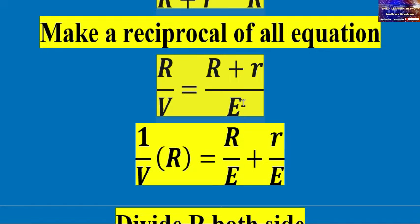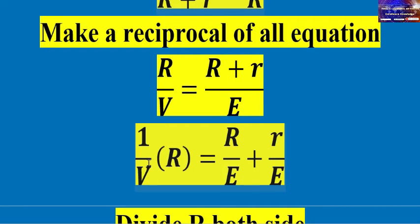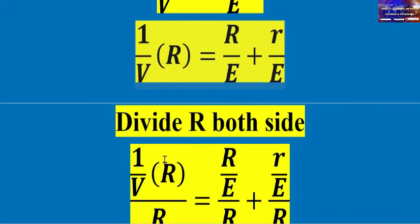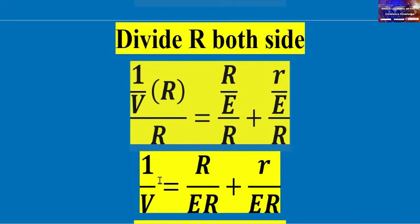Expanding: 1 over V equals R over EMF plus r over EMF, multiplied through. To isolate 1 over V against 1 over R, divide both sides by R. The resulting equation becomes: 1 over V equals r over EMF times (1 over R) plus 1 over EMF.